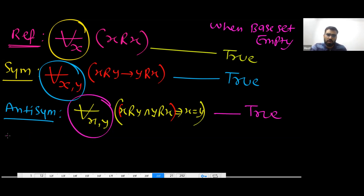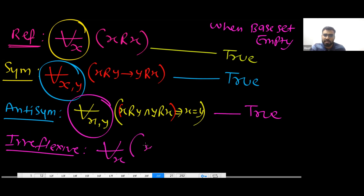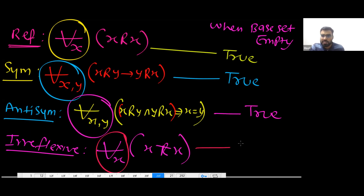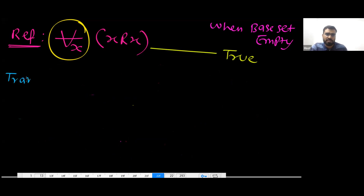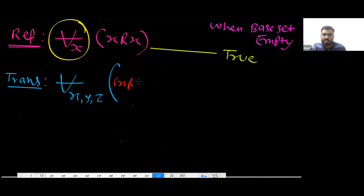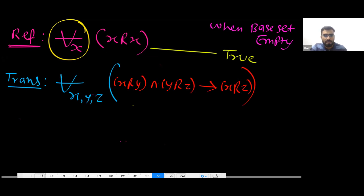What about the definition of irreflexive? The definition of irreflexive is: for all elements X, X is not related to X. This is also a universally quantified statement, so when the base set is empty, this is also true. For transitivity: for all X, Y, Z — if X is related to Y and Y is related to Z, then X is related to Z. This is also a universally quantified statement, so when the base set is empty, this also becomes true.